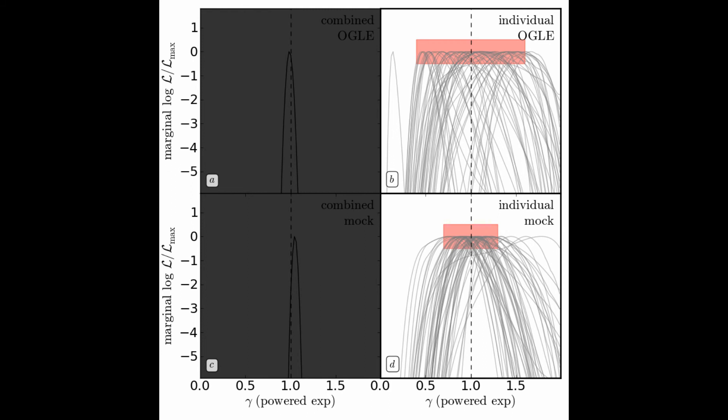If we compare the two right panels, the data light curves on the top show a larger scatter in gamma than the mock light curves on the bottom. We have done a careful assessment of the photometric error properties in the data and conclude that the large scatter we see is primarily driven by the intrinsic scatter in the data light curves.